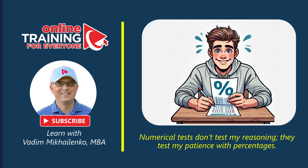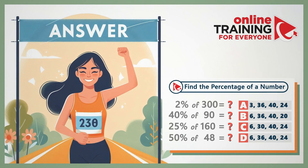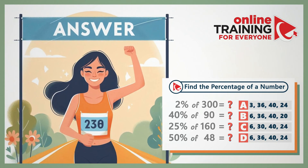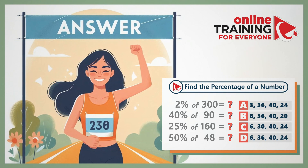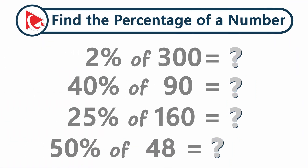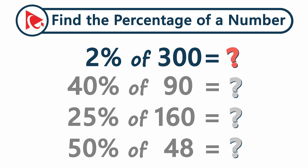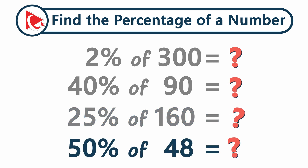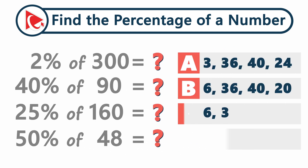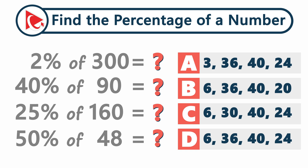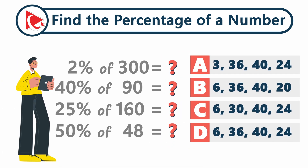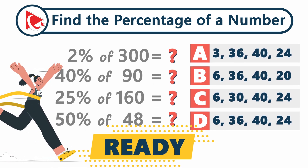This question feels like running a marathon — the first few miles are the hardest, but with each step you build the stamina to keep going. Stay strong and you will cross the finish line. You need to find the percentage of a number: what is 2% of 300? What is 40% of 90? What is 25% of 160? And 50% of 48? Your choices are A, B, C, and D. Carefully review the question and lock in your answer before time runs out. Ready, set, go!